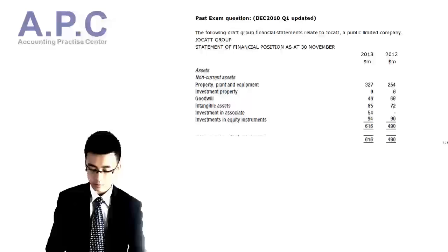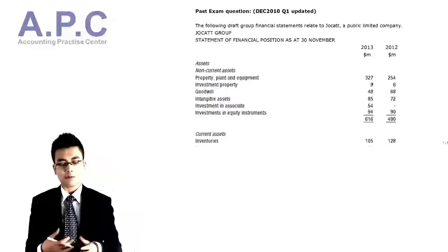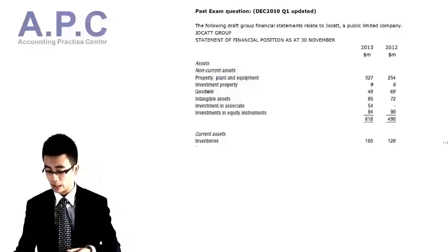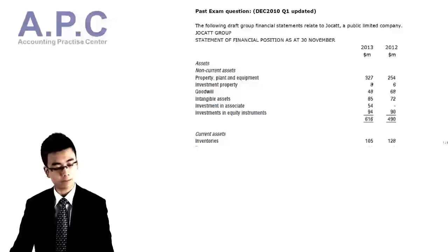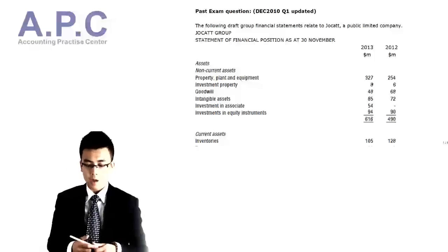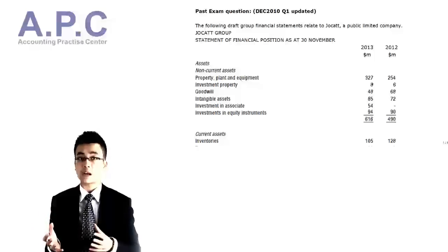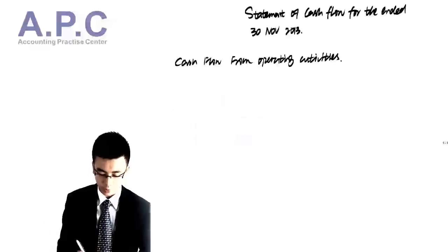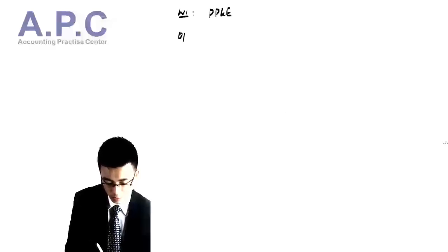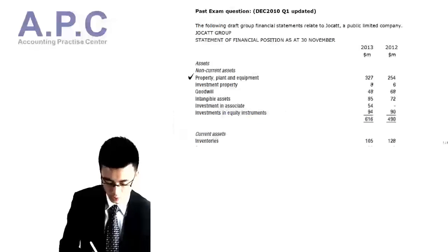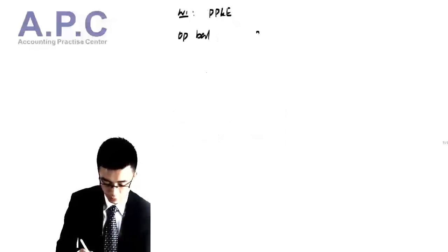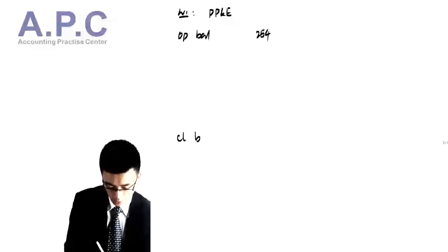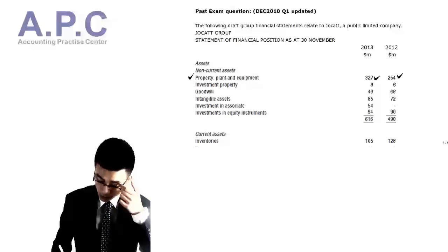Let's look at this question. We're given the statement of financial position for the JewelCart group for 2012 and 2013. Firstly, we've got property, plant and equipment. We need to set up a working for that — working one, PPE. The opening balance from the question is 254, and the closing balance is 327.